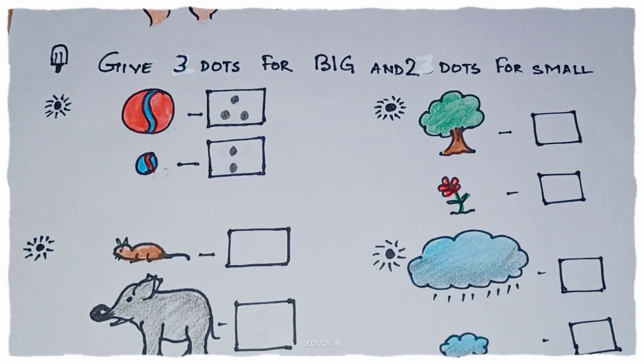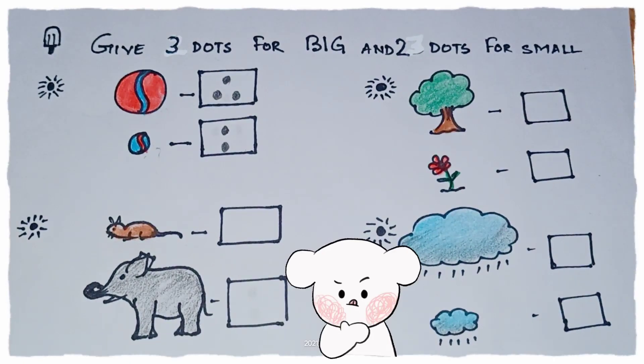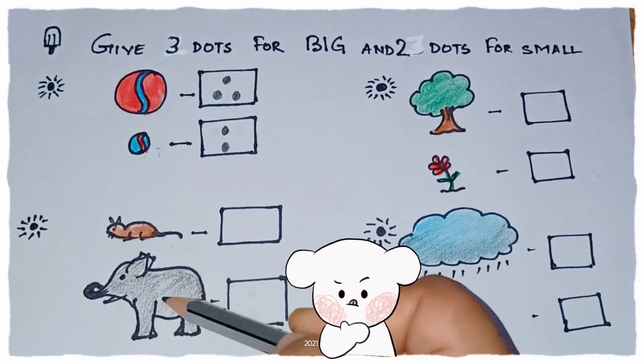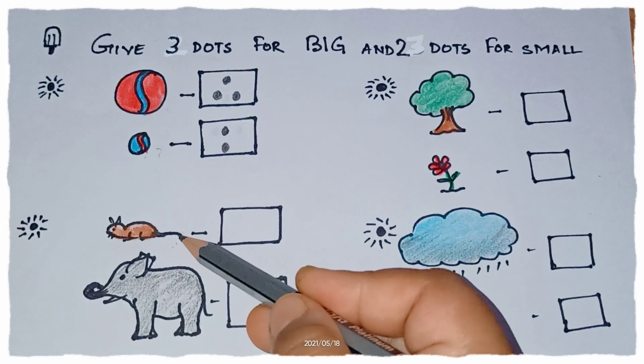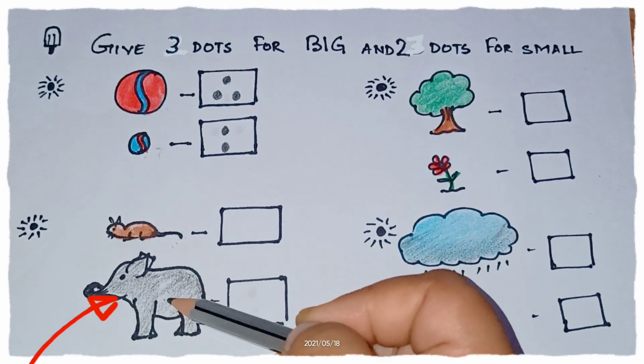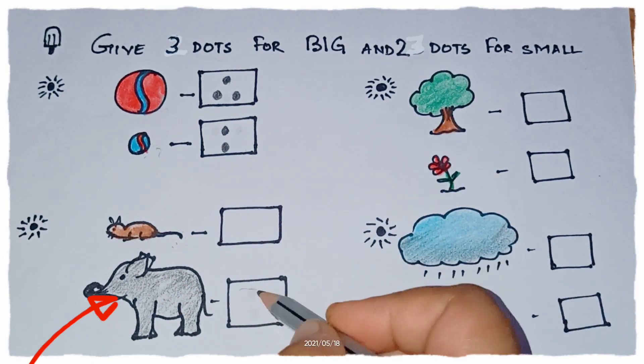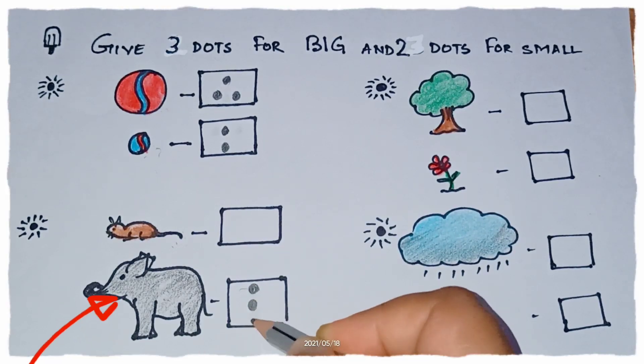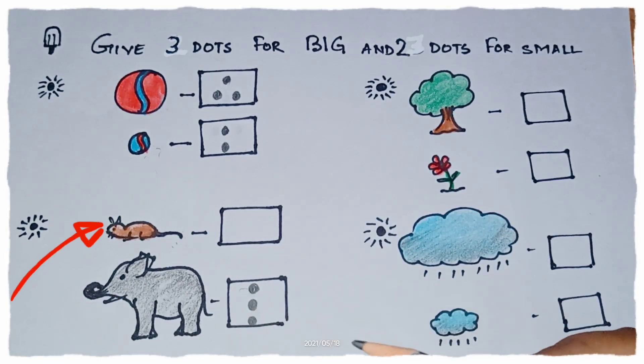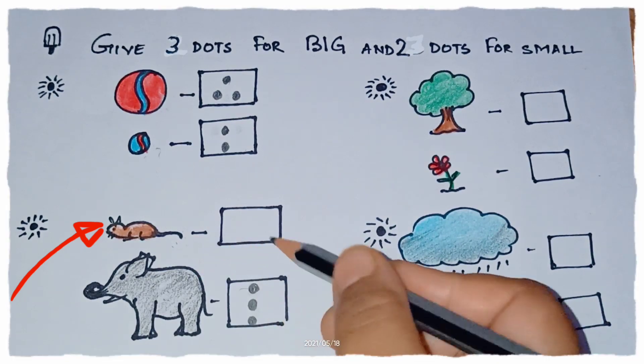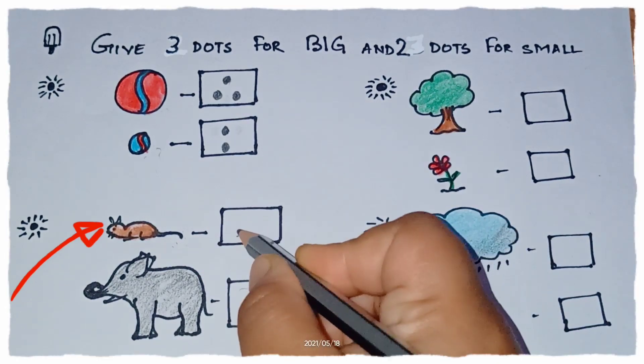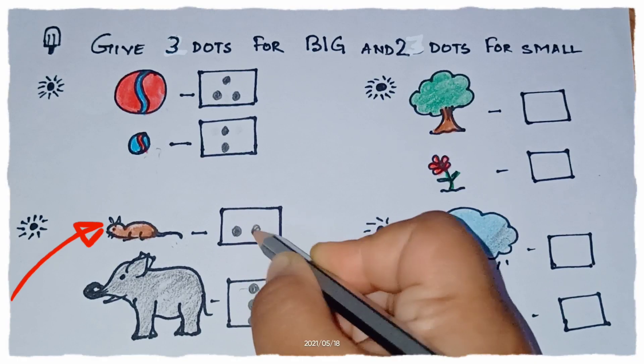Now here we have a rat and an elephant. Which one is big? The rat or an elephant? Elephant. So we will give here three dots. And the rat is small. So we will give here two dots. Good.